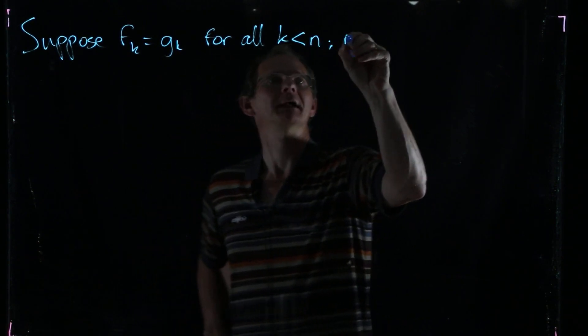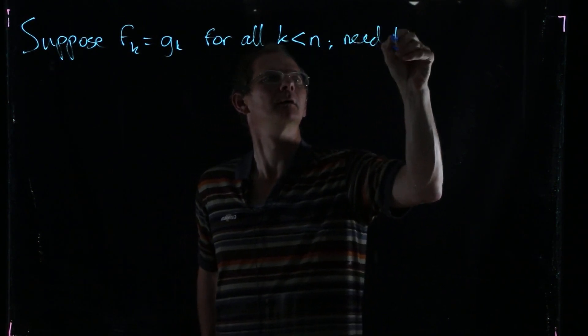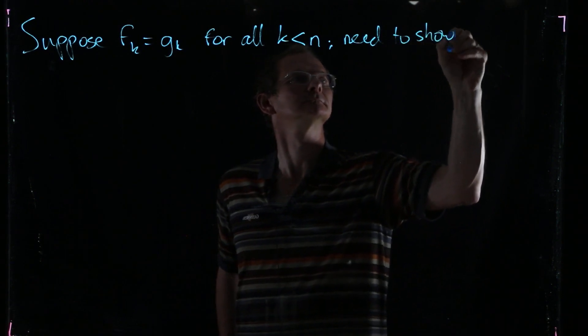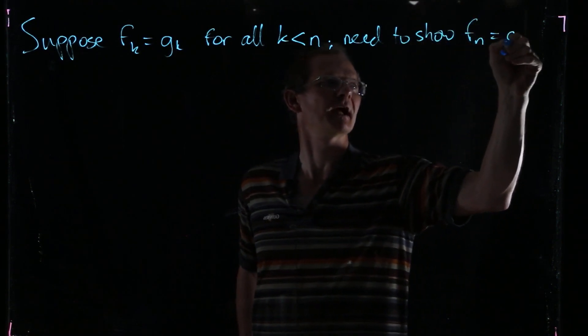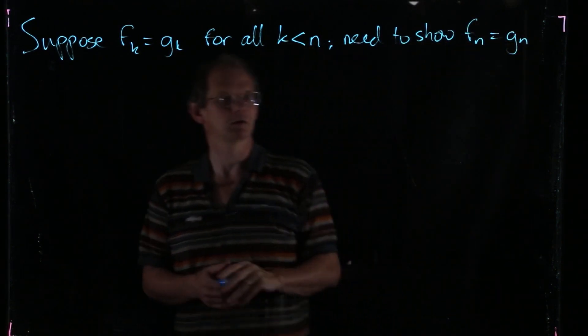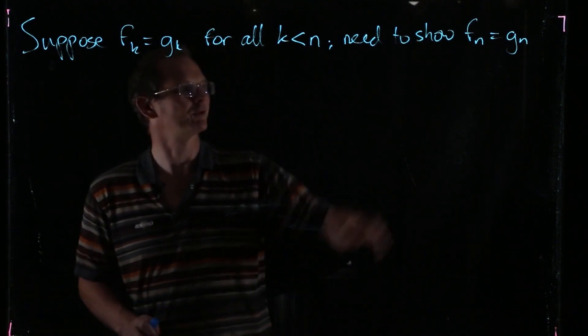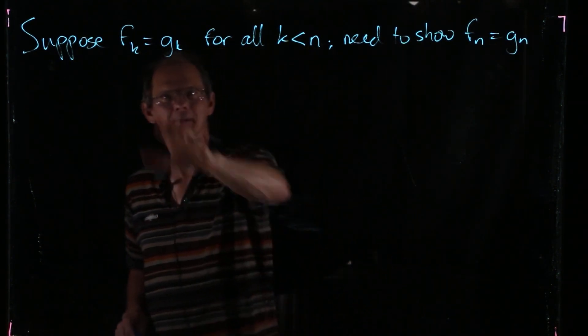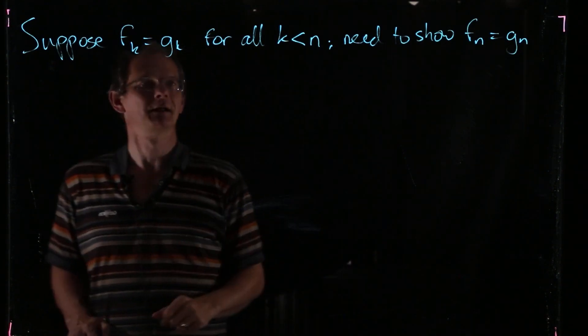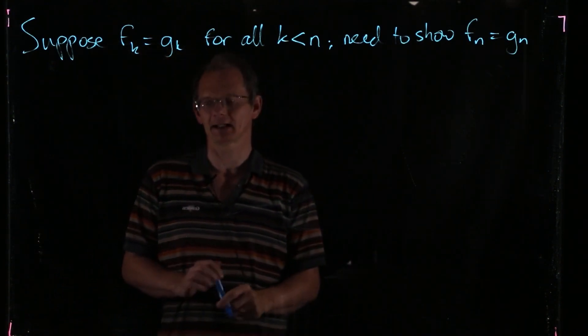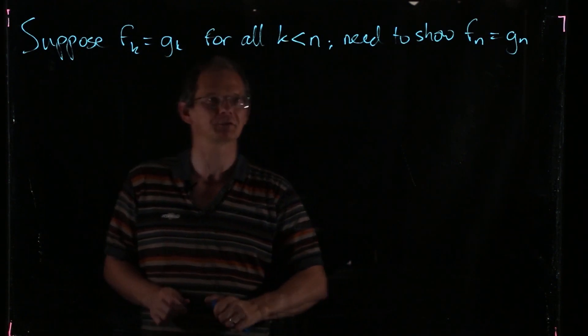So suppose that we know that Fk is the same as Gk for all k less than some integer n. We need to show Fn is equal to Gn. We've got a statement that we want to prove by induction, assuming that it's true for all smaller k, and then we need to prove it for the next one.